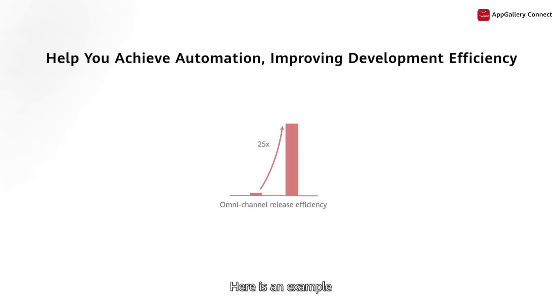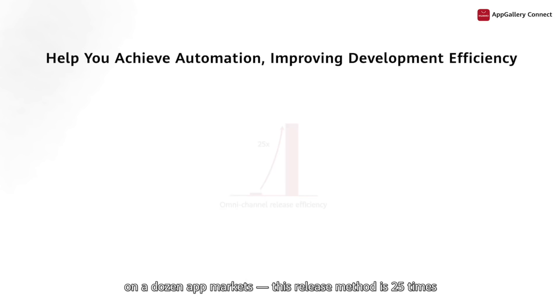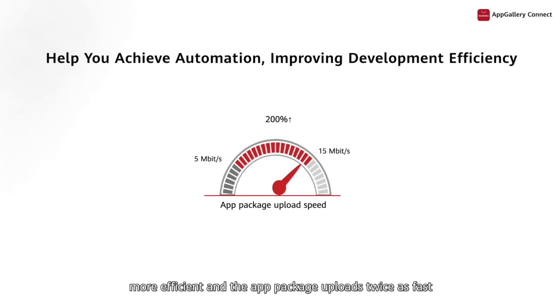Here's an example. We can set a proxy server to automatically release an app on a dozen app markets. This release method is 25 times more efficient and the app package uploads twice as fast.